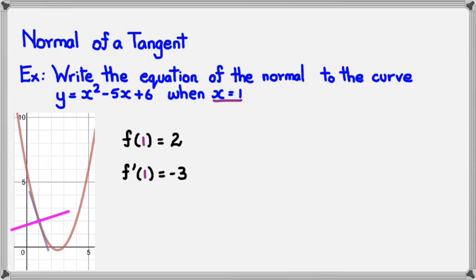So from this point, we can actually figure out what the gradient of the normal is. Because we know that -3 times the gradient of normal equals -1. So which means gradient of normal is equal to -1/-3, which gives us positive 1/3. So once we have this, we have the gradient and we have a point. And so we just use the equation of the line, which is y - y₁ = m(x - x₁). And if we keep going, our point that we're working with is (1, 2).